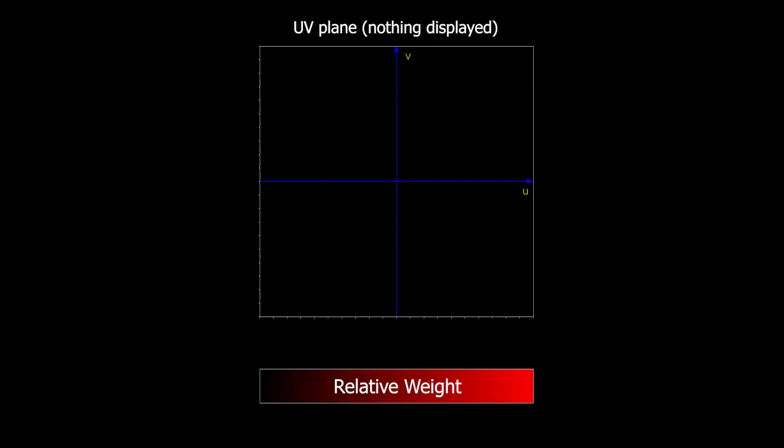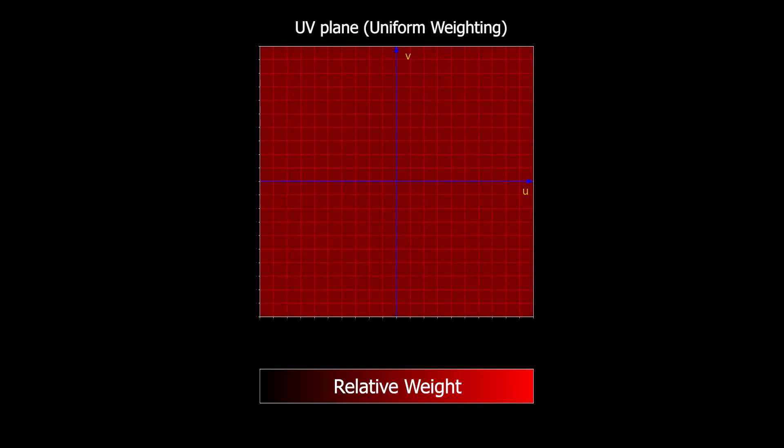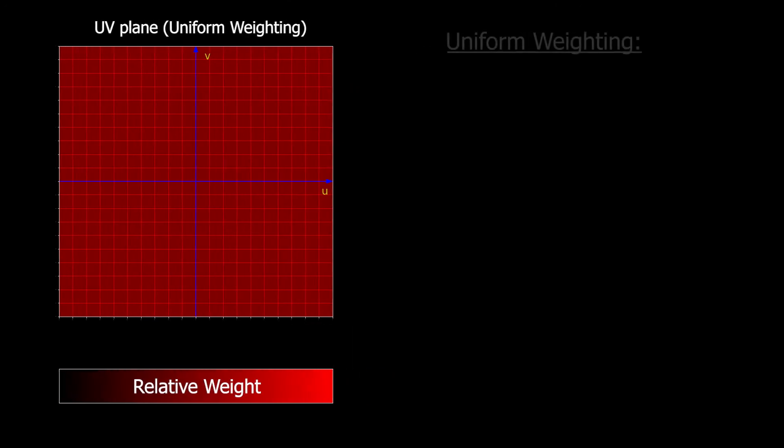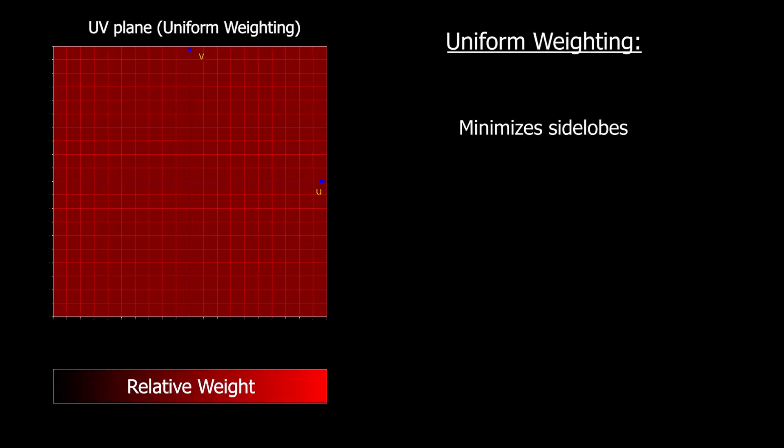The most intuitive weighting scheme for combining data is to average the visibilities within each grid cell, resulting in a constant total weight for each grid. This is called uniform weighting. Said another way, all grid cells are treated equally in the resulting image. This minimizes side lobes in the point spread function and yields an image with high angular resolution, but at the cost of sensitivity to extended emission.